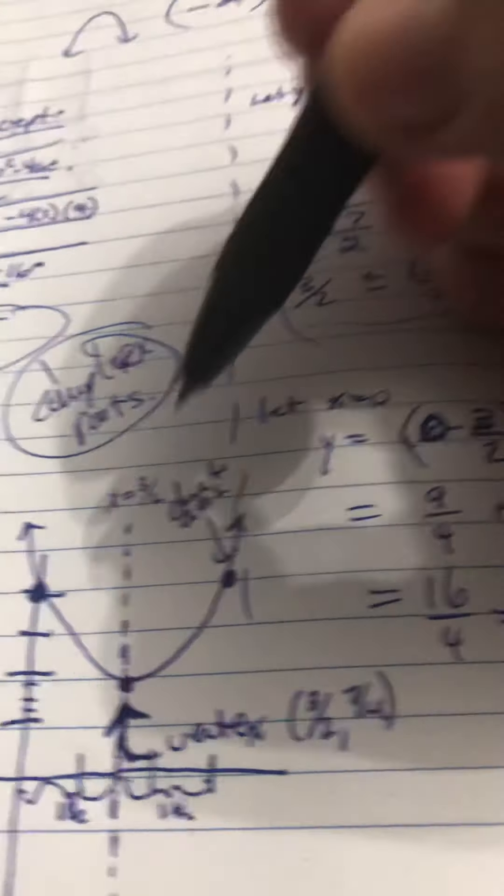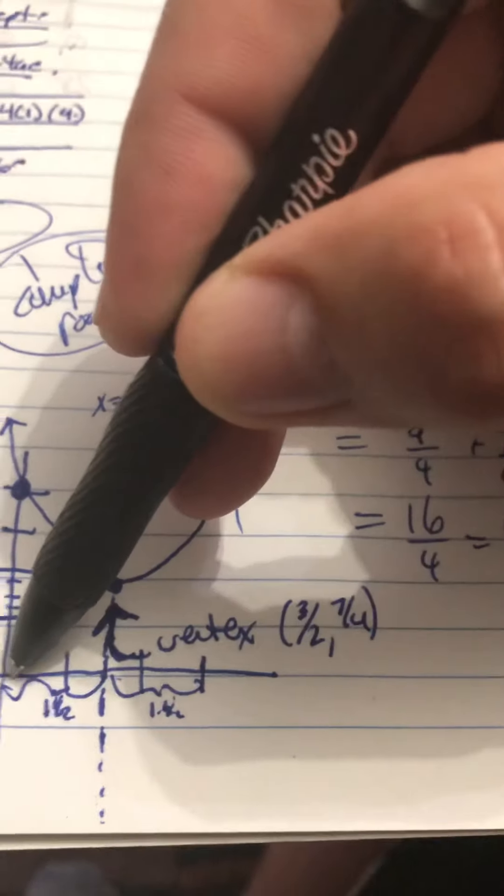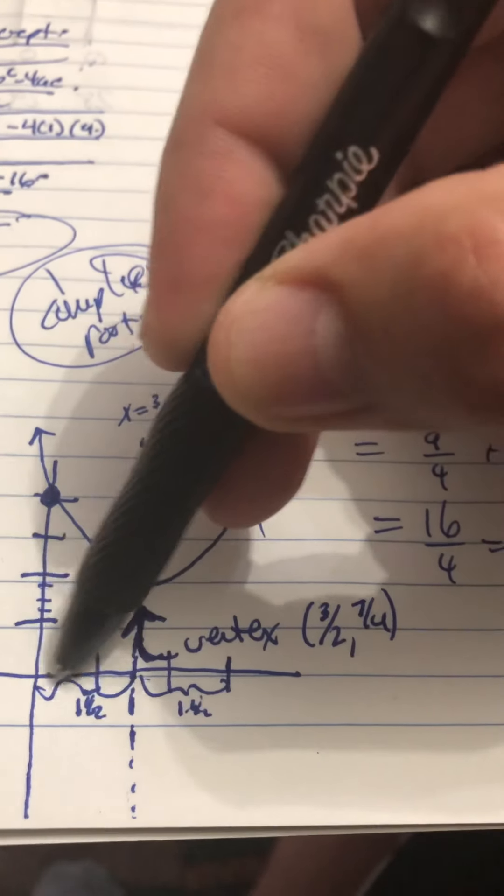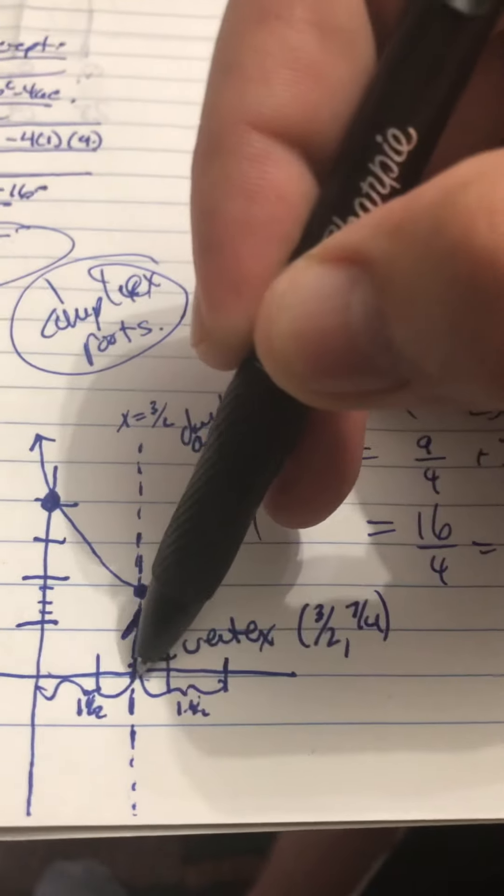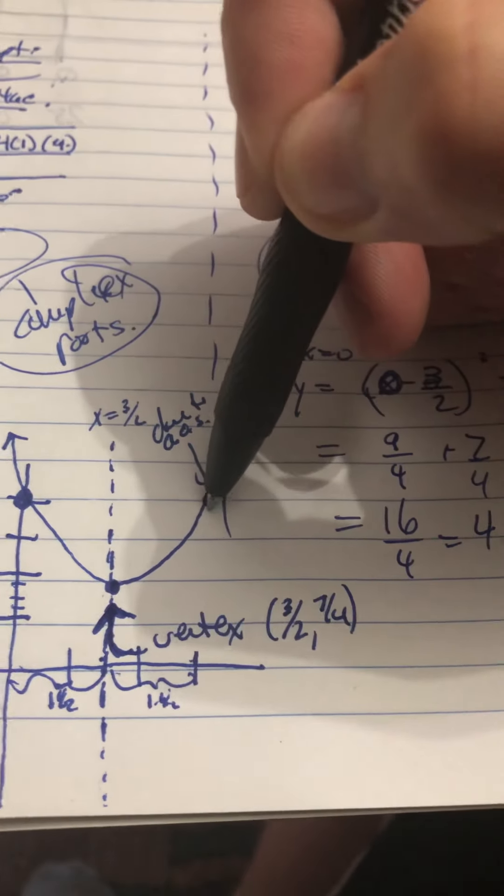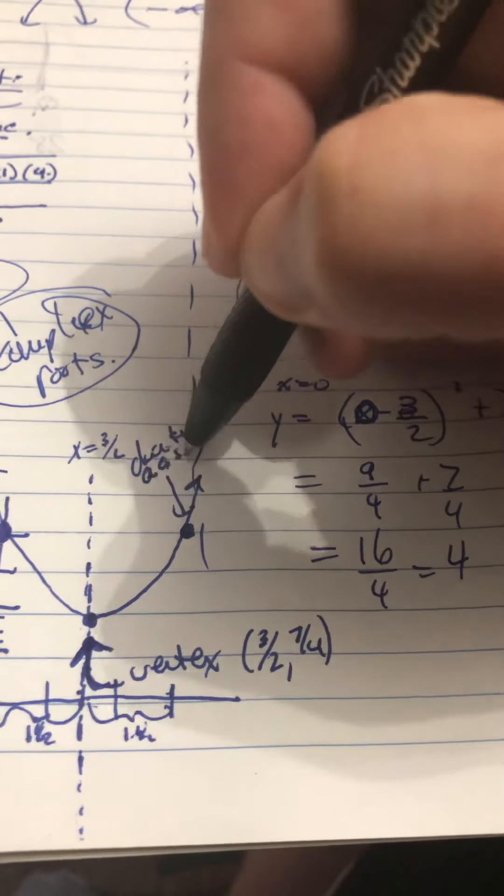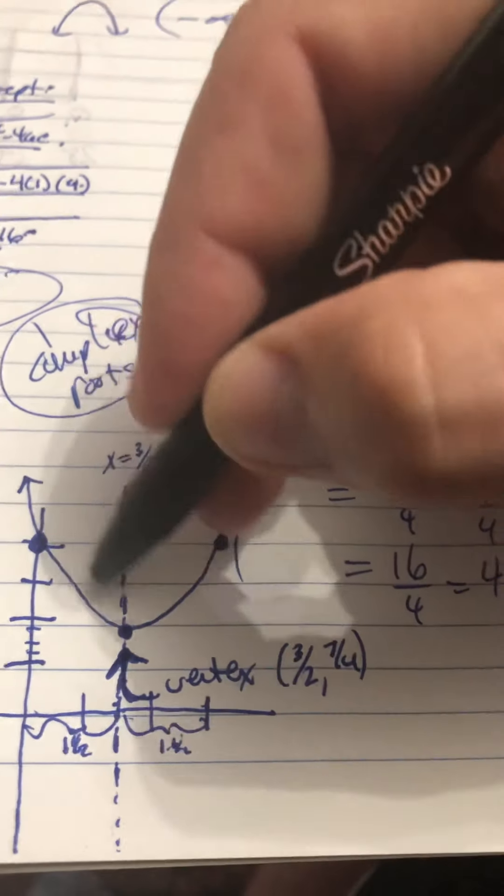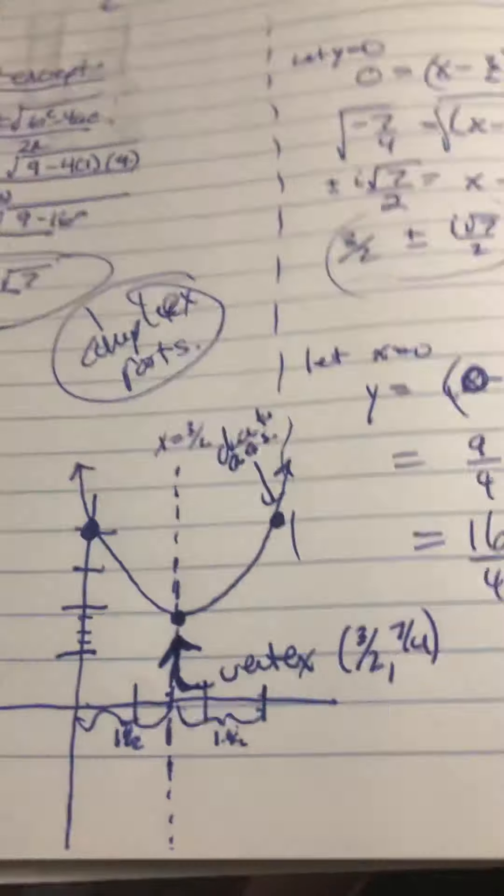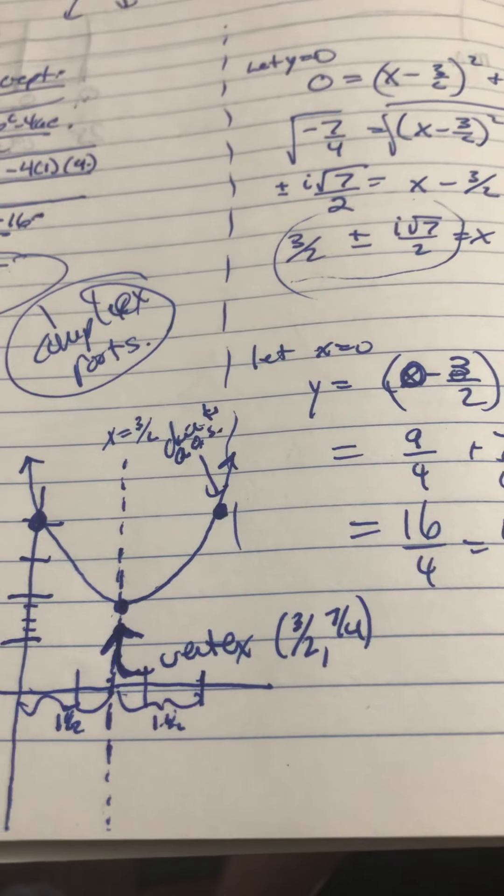Now, the axis of symmetry is really quite nice. You'll notice that this is 1 and a half units away. And if I go 1 and a half units to this side, I'll also be up at 4. And I wrote up here, due to AOS axis of symmetry. And then I'm able to sketch my parabola.